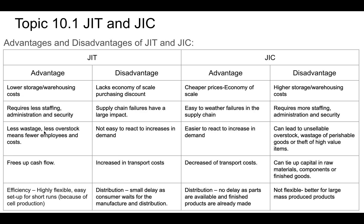An advantage of just-in-time manufacturing is less wastage. Less overstock means fewer employees and lower costs. This is particularly important for perishable items — things like food with a low shelf life — where overstocking leads to more waste.